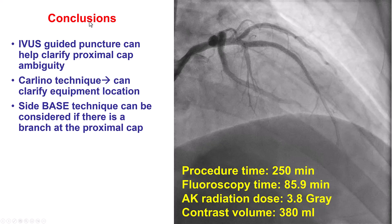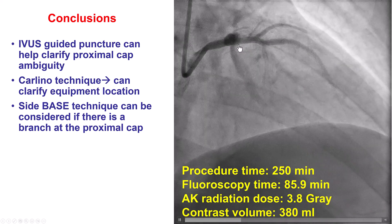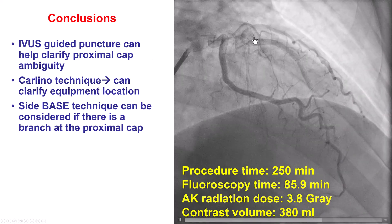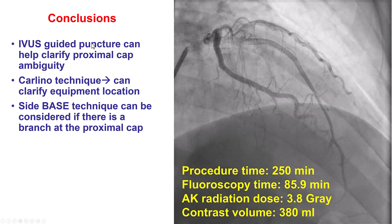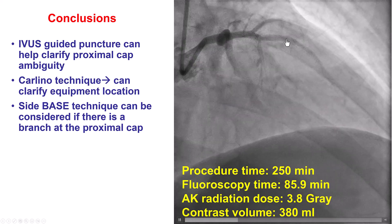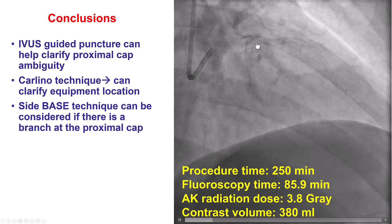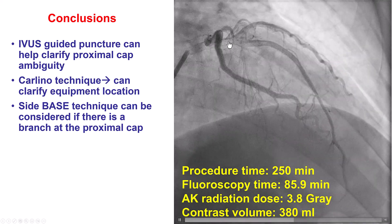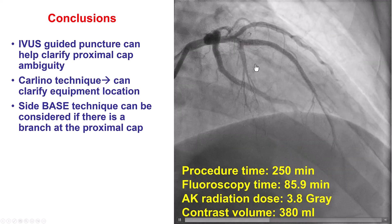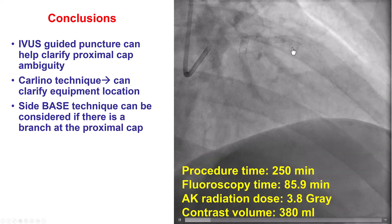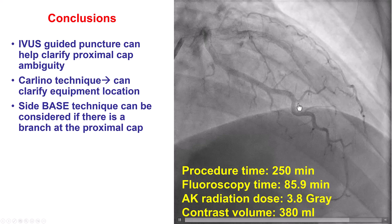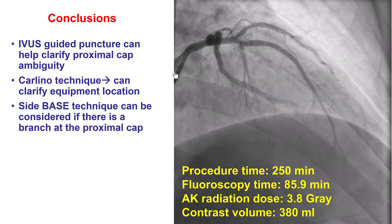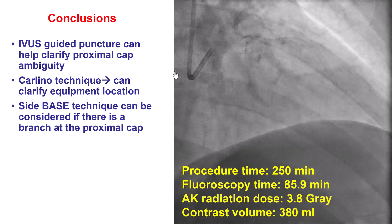Multiple lessons from this case. First, proximal cap ambiguity can be challenging and can predispose to complications such as perforation if the wire exits the vessel architecture. Second, there are three major techniques for proximal cap ambiguity, and all three were attempted here: IVUS-guided puncture (which caused a small contained perforation), retrograde (which did not work), and the side-base technique (balloon inflated proximal to and partially into the second septal branch, with a knuckled wire advancing along the vessel course and facilitating re-entry). Finally, the Carlino technique is useful when you are unsure where you are in the vessel architecture — it can indicate whether you are in the extraplaque space — but the key is to use a very small amount of contrast, such as half a milliliter.